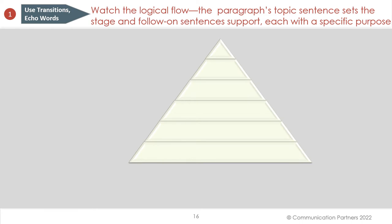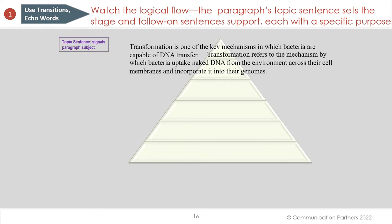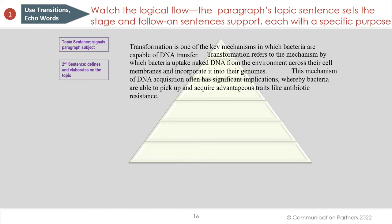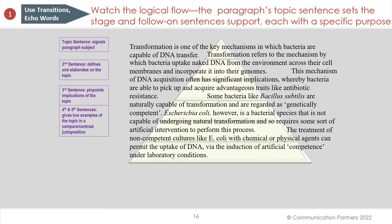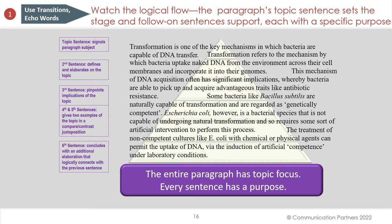Watch the logical flow of this paragraph — the topic sentence sets the stage and follow-on sentences each serve a specific purpose. The topic sentence signals the paragraph subject. The next sentence defines and elaborates on transformation. The following sentence pinpoints the implications of the topic — bacteria able to pick up and acquire traits. The fourth and fifth sentences give two examples in a compare-and-contrast juxtaposition. The last sentence concludes with additional elaboration that logically connects with the previous sentence. Every sentence has a purpose and serves a function, and as a writer you should recognize how each sentence serves that function.